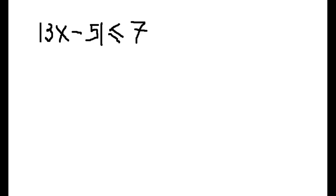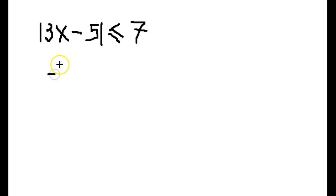In this video, we're going to explore the different ways of dealing with absolute value inequalities that lead to either conjunctions or disjunctions. Here's an example: the absolute value of 3x minus 5 is less than or equal to 7. As in the last video, what we can do is write this as a three-sided inequality.